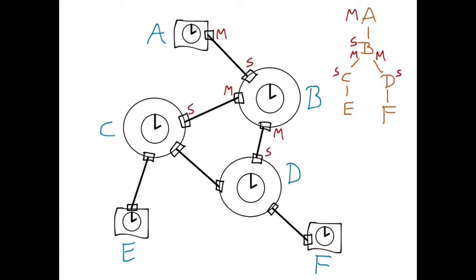Moving further down the hierarchy, C is the master of E, with its corresponding port therefore being in the master state. As a result, E will be a slave of C and its port will be in the slave state. Similarly, D is the master of F and its corresponding port is therefore in the master state. And F is the slave of D and its port is in the slave state.